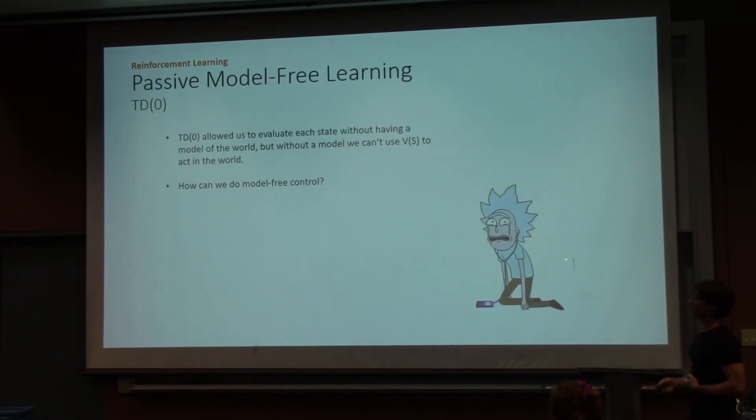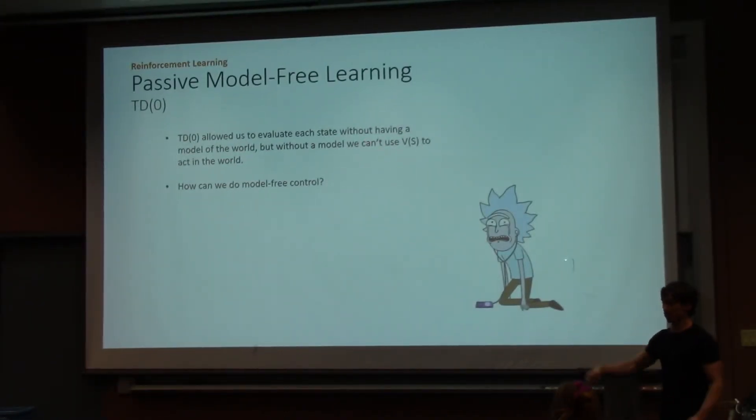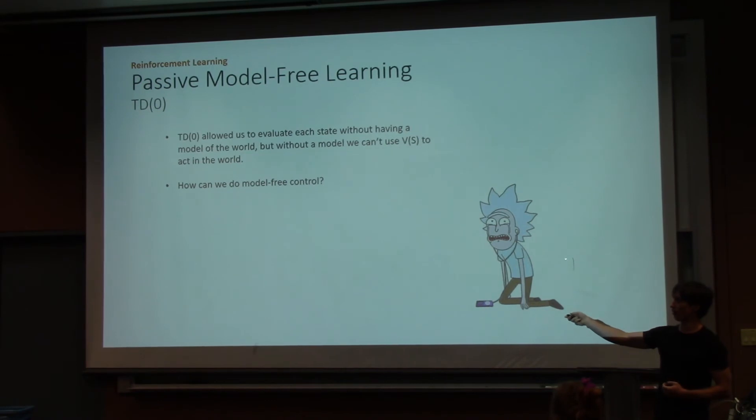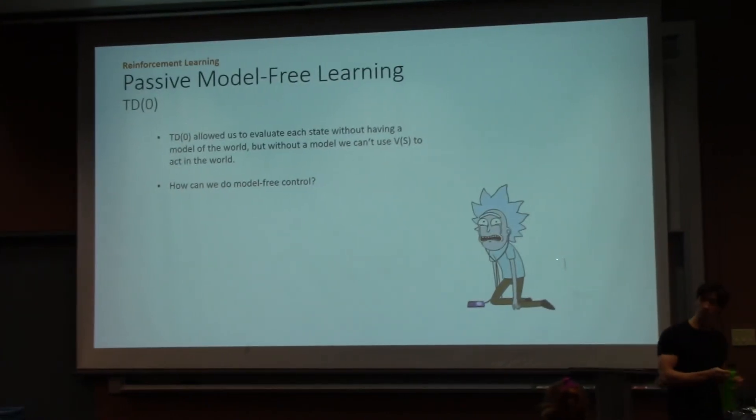All right. So, TD(0) allowed us to evaluate each state without having a model of the world, but without a model, we can't use V(S) to act in the world. Why is that? Well, if we have V(S), in order to decide what is the best action to do, we still have to have a model of the world in order to find out where we land, in order to follow the transition table. So, how can we do model-free control? And actually, before I do that,